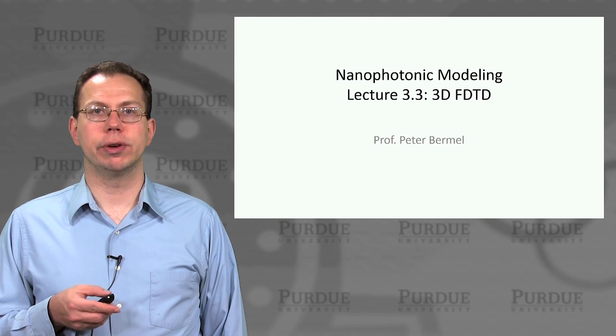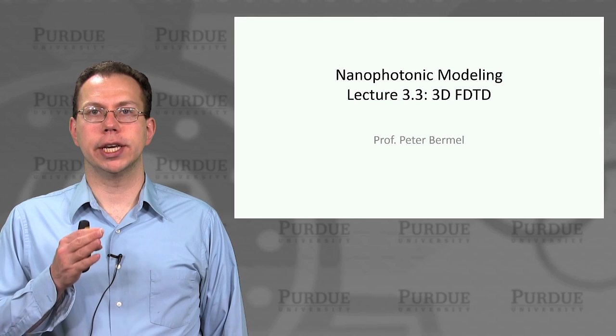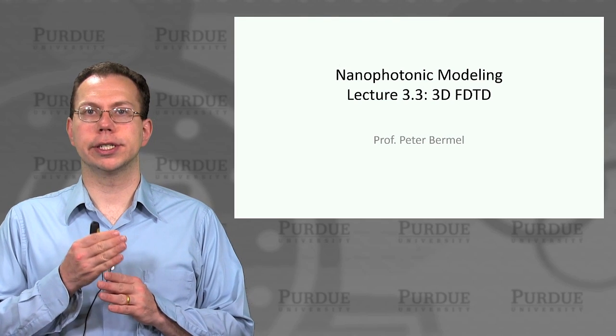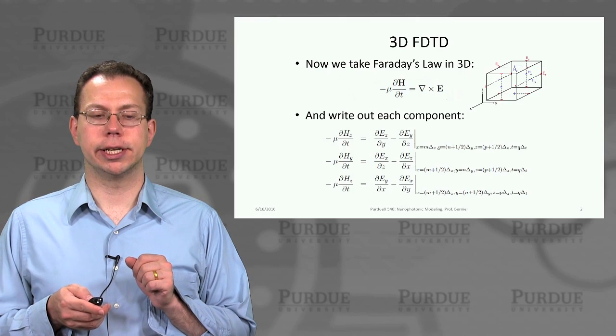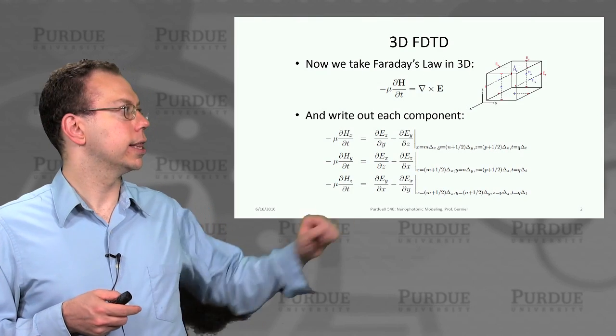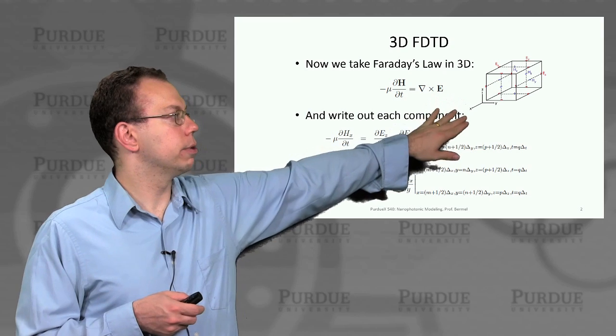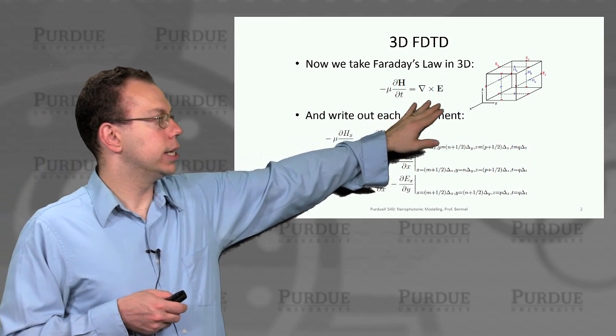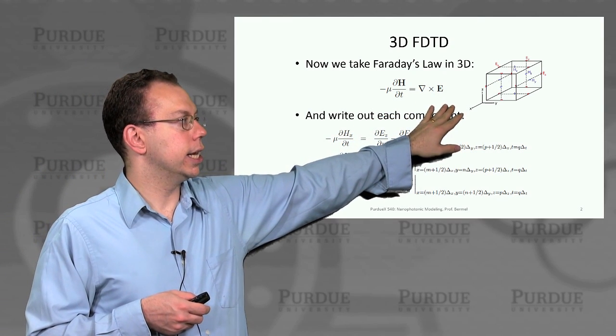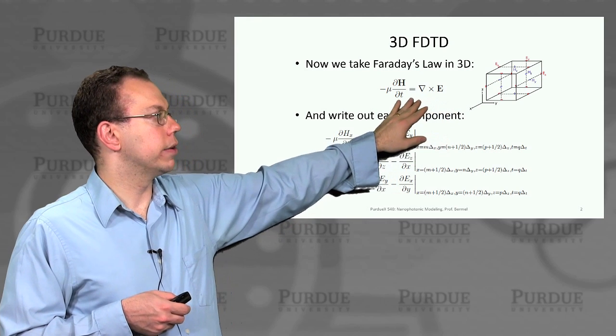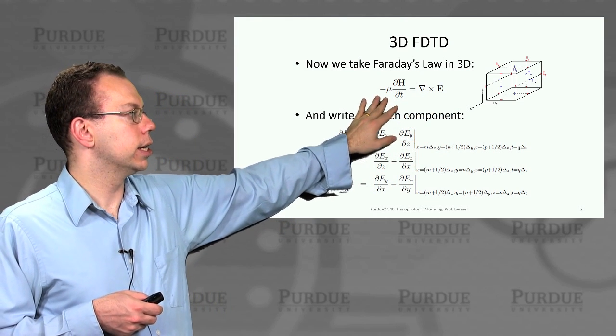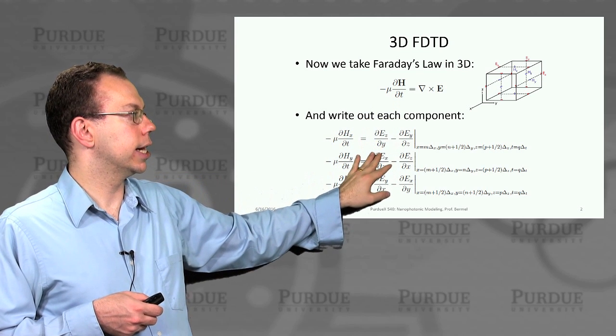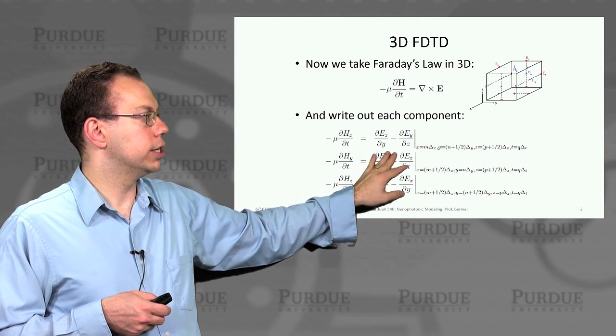And we already said that we want a Yee lattice in which we have E fields and H fields all staggered by half a grid point in order to get the maximum accuracy in our solutions. This is the lattice on the upper right hand side. You see E fields are on the edges, H fields are on the faces. And then we want to solve Faraday's law in 3D.